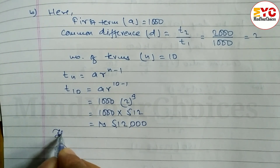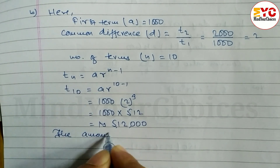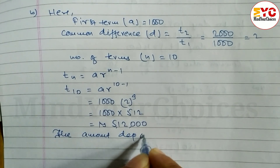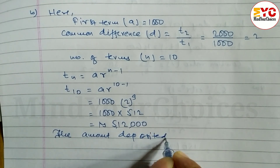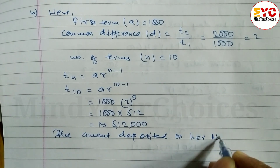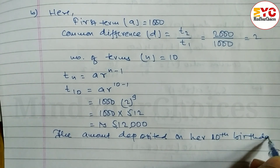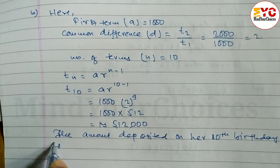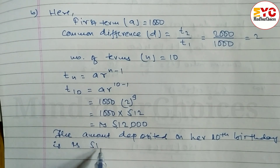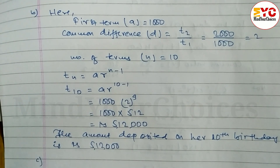So we can write here: the amount deposited on her 10th birthday is rupees 512,000.